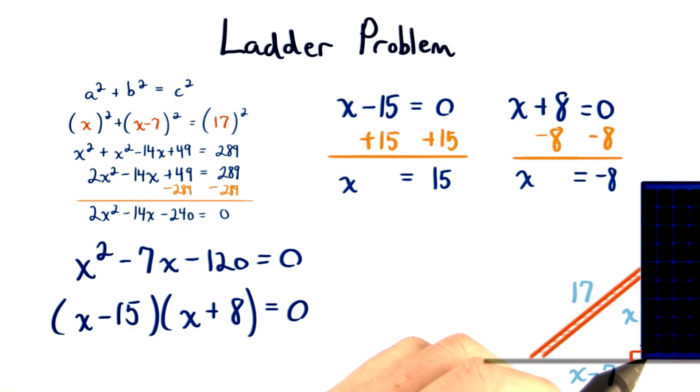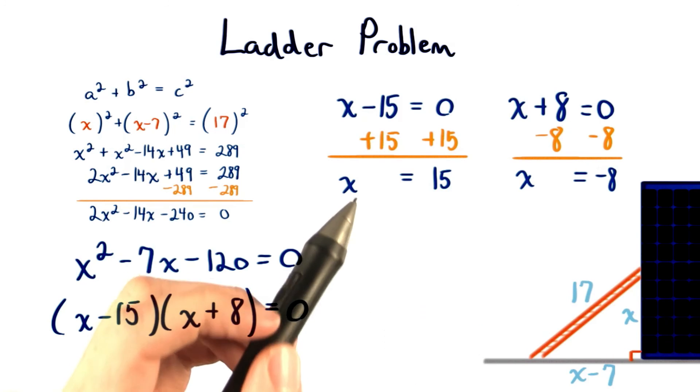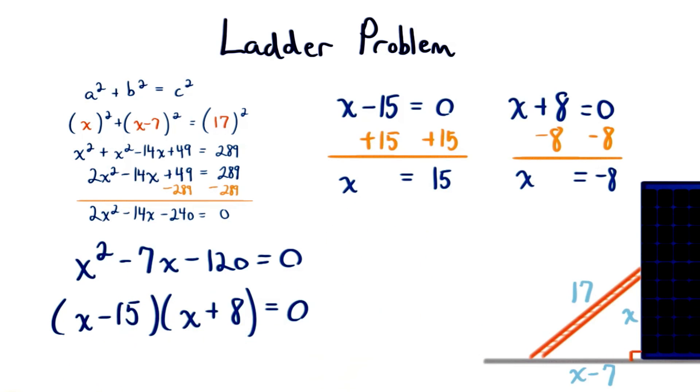We know that the distance cannot be negative 8 feet, since distance is always positive. So instead, x is going to equal 15 feet. This is the distance from the top of the ladder to the base of the building.